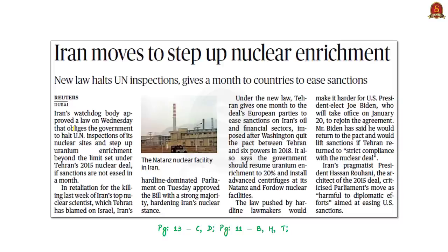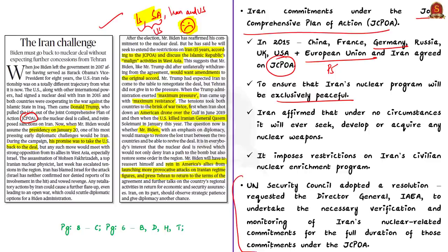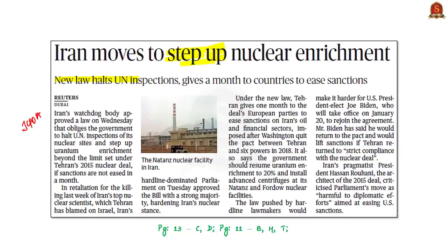However, a new law was approved in Iran mandating the government to halt UN inspections of its nuclear sites and step up uranium enrichment beyond JCPOA limits. Under the 2015 deal, Iran's civilian nuclear sites had been opened for IAEA inspections. This new law says Iran should stop IAEA inspections and start enriching uranium — a step toward developing an atomic bomb. This law makes it even harder for Biden to rejoin and renegotiate the agreement. While people are optimistic about Biden, Iran is making it more complicated to return to the nuclear deal.